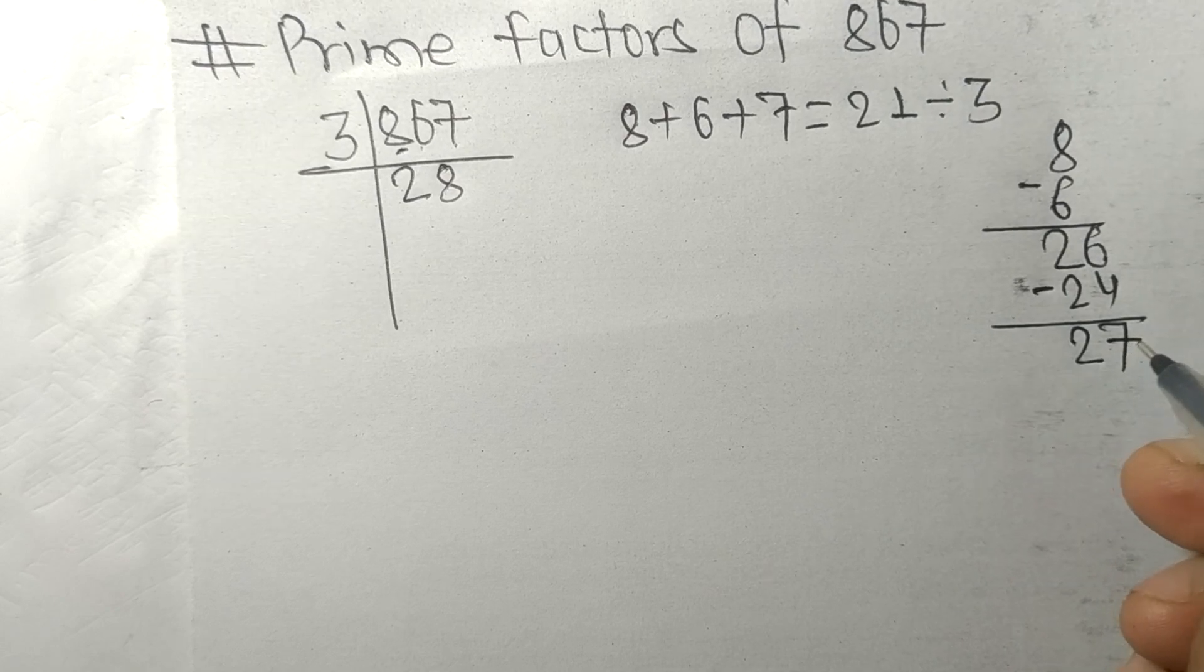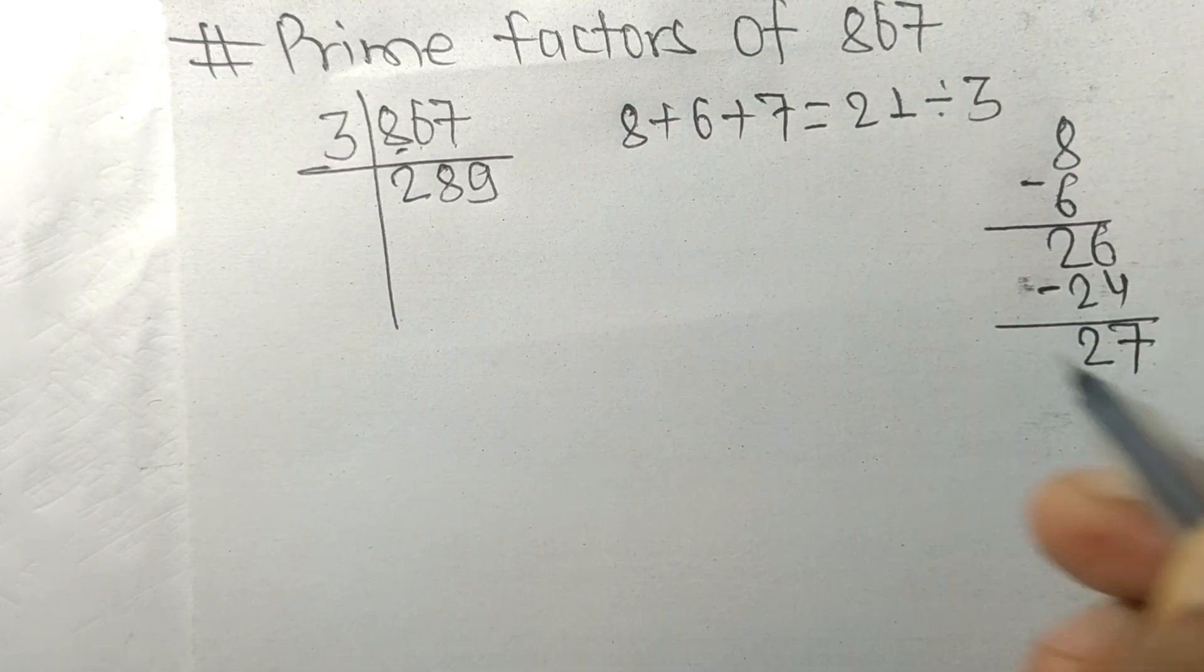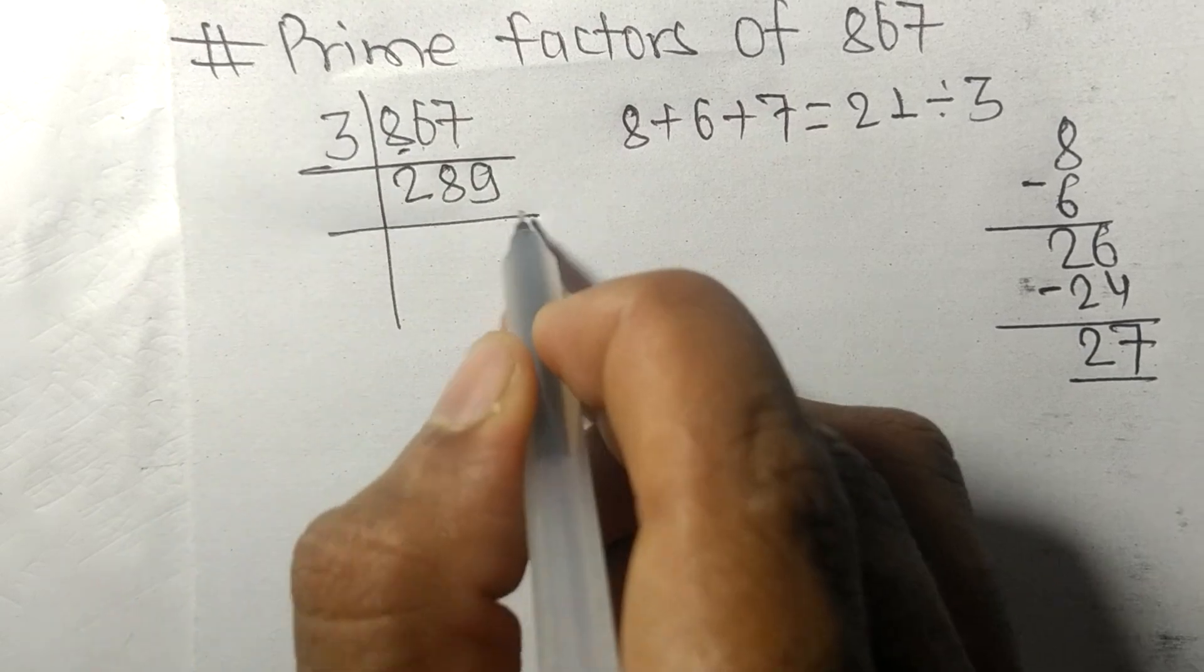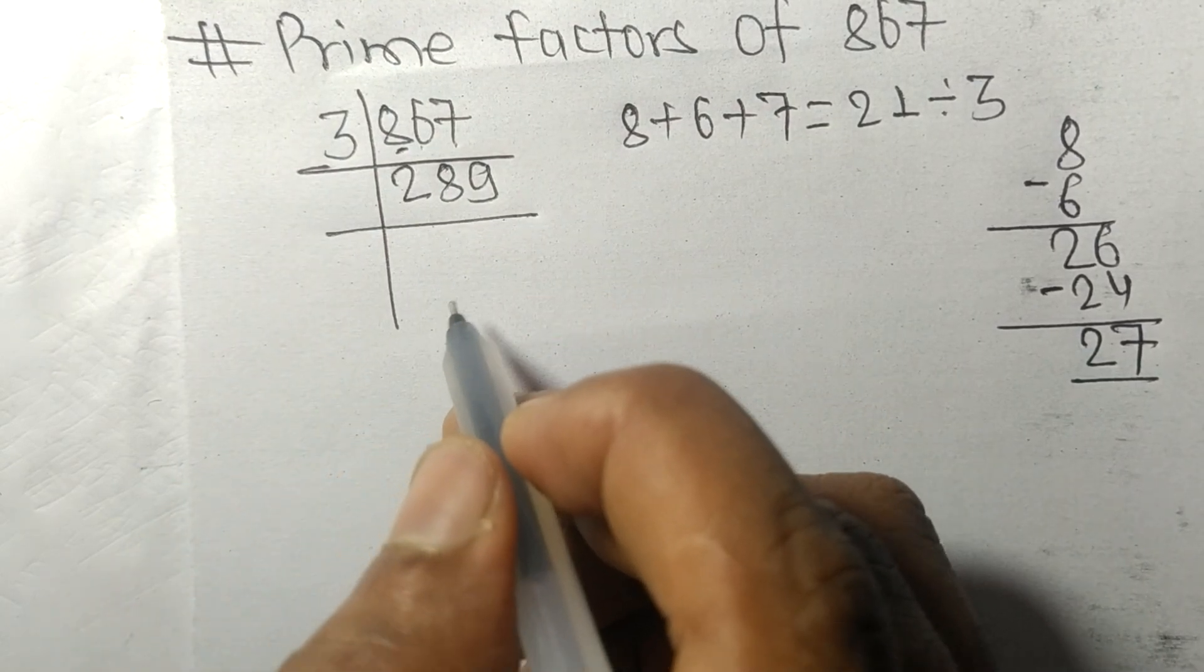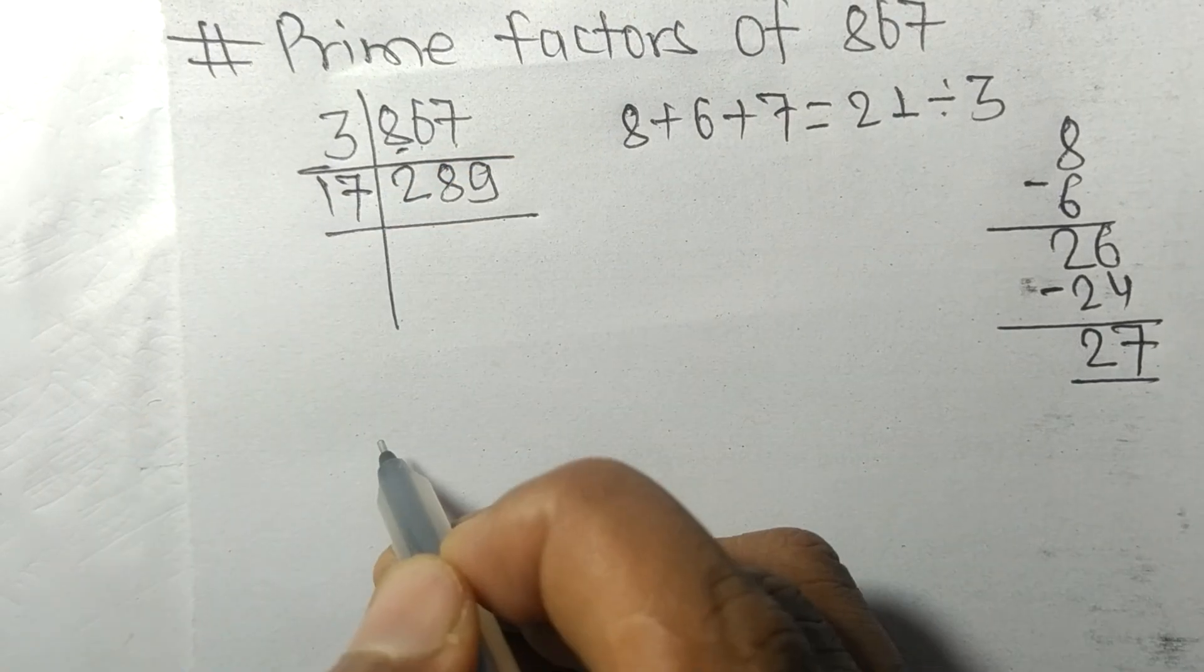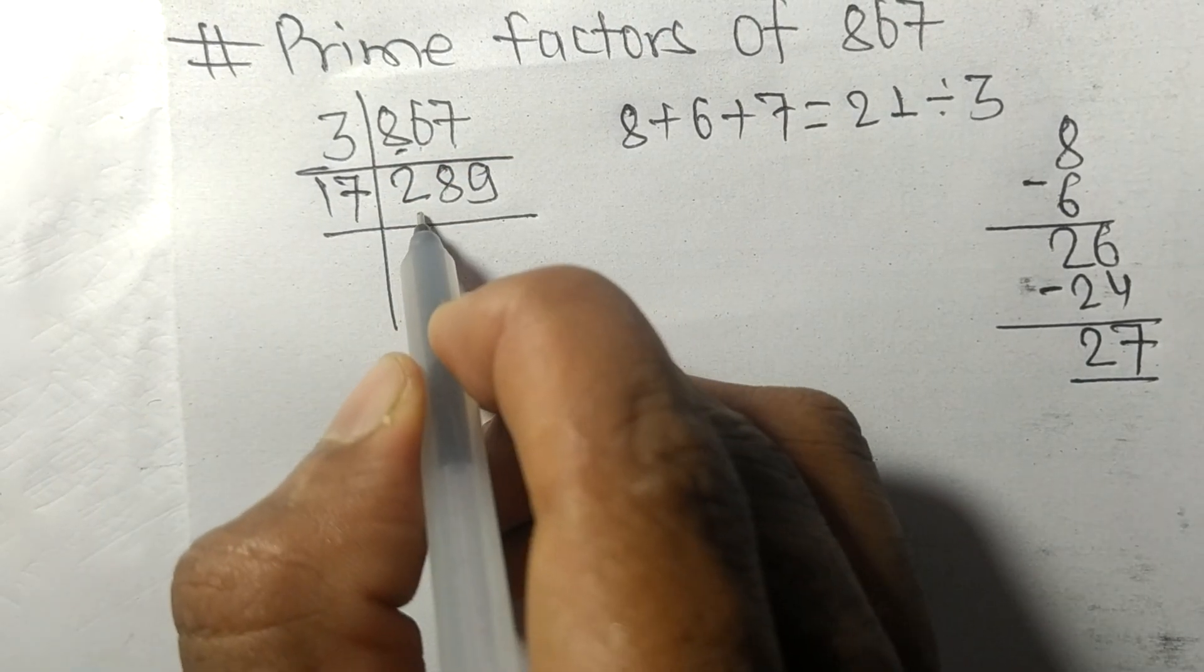So now we got 289, which is exactly divisible by 17. So first we have 28.